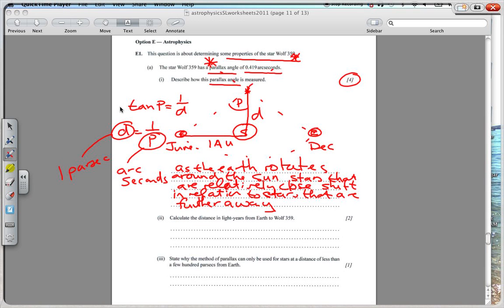So calculate in light years from Earth to Wolf 359. Now we have this formula here that D is equal to 1 over P. So we just put in the arc seconds here, 0.419. So we get 1 over 0.419, and that gives us about 2.39 parsecs.